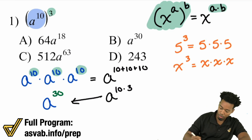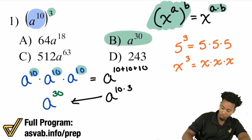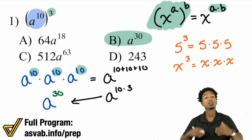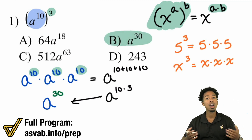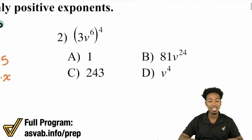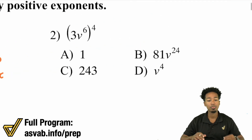The first answer was B. The shortcut is: power to a power, multiply those exponents. Let's take a look at problem number two.